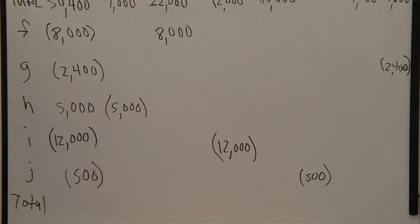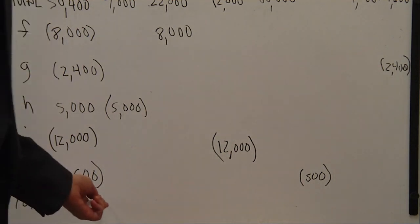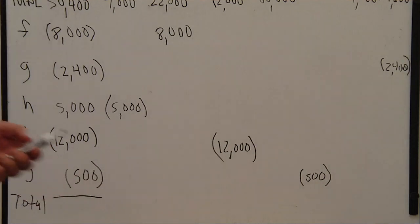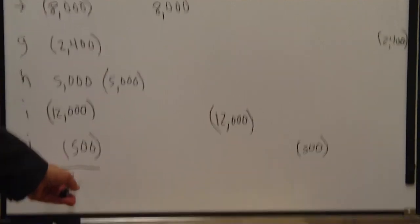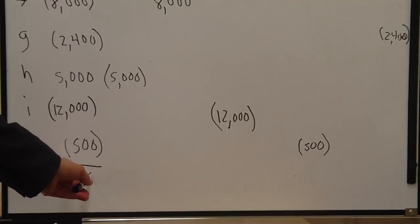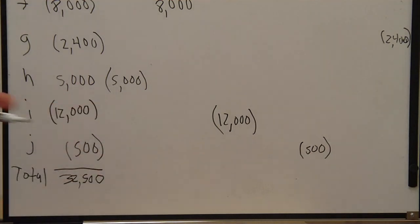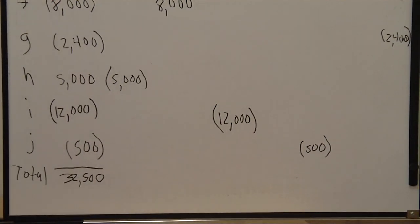All we need to do now to finish up the problem is total it up and make sure the total is balanced. The total cash is $32,500. The total accounts receivable, $2,500.